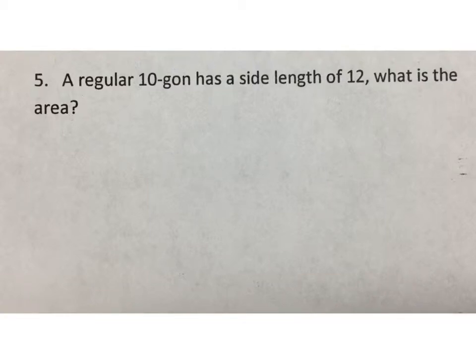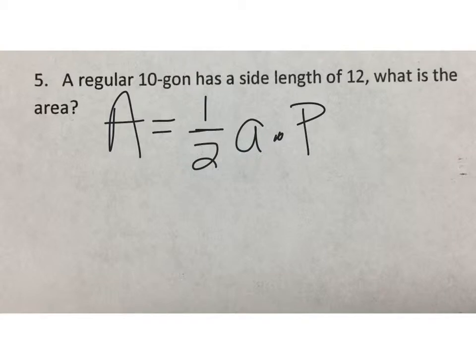We want to find the area of a regular 10-gon with a side length of 12. We have to use the formula for a regular polygon, which is one half of the apothem times the perimeter.